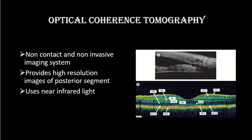The second investigation is optical coherence tomography, which is a non-contact, non-invasive imaging system that provides high-resolution images of the posterior segment. Nowadays we can also perform anterior segment OCT. It uses light instead of sound — unlike ultrasonography — to take these pictures. This is the normal picture of OCT, which depicts different layers of the retina.